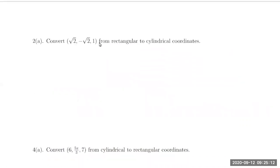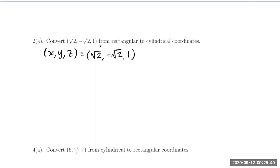Let's start with problem 2 from the textbook, part A. We want to convert the point (√2, −√2, 1) from rectangular to cylindrical coordinates. I like to first identify what coordinates I have: x, y, and z are √2, −√2, and 1. My goal is to find cylindrical coordinates r, theta, and z. I already know z equals 1, so I really only need to find two values: r and theta.